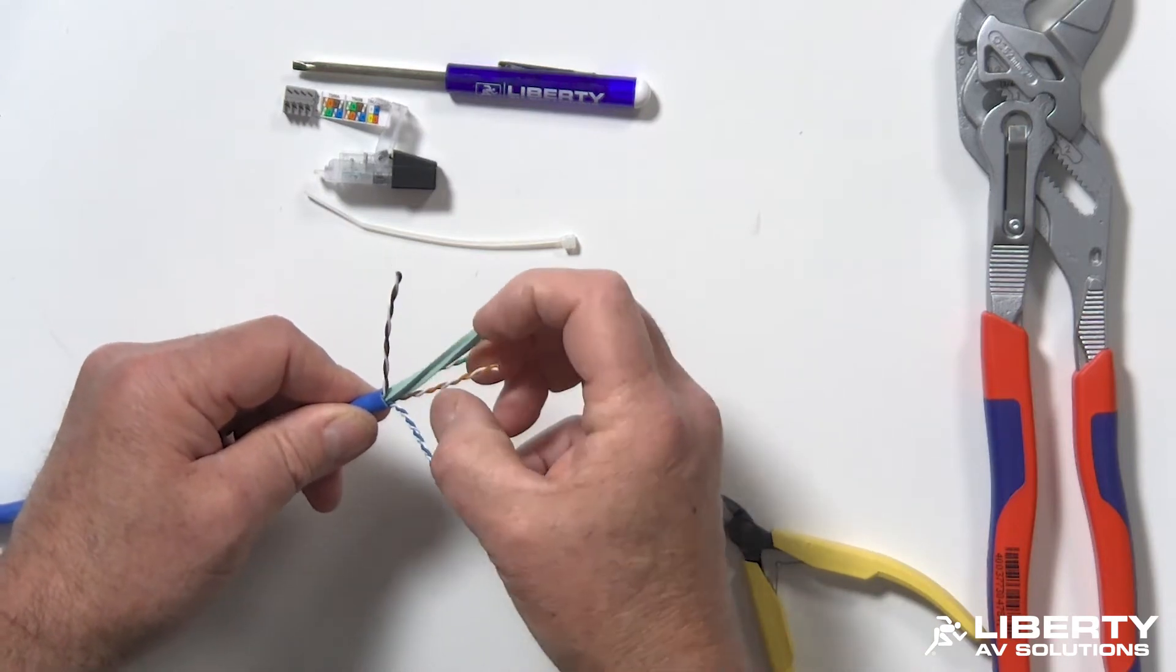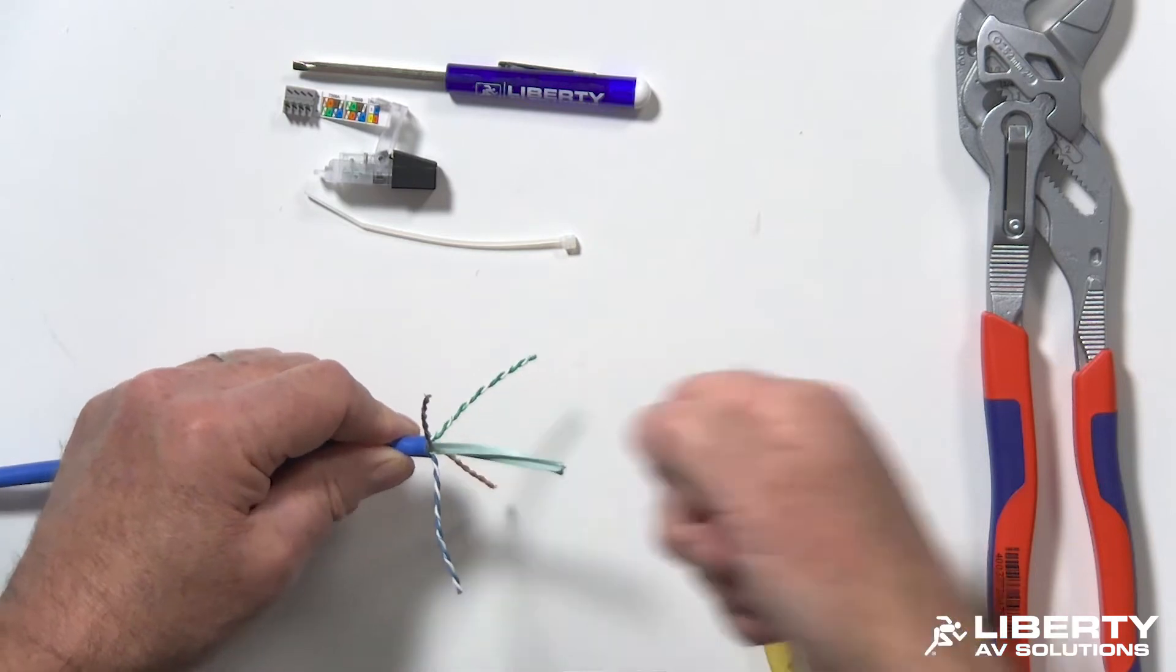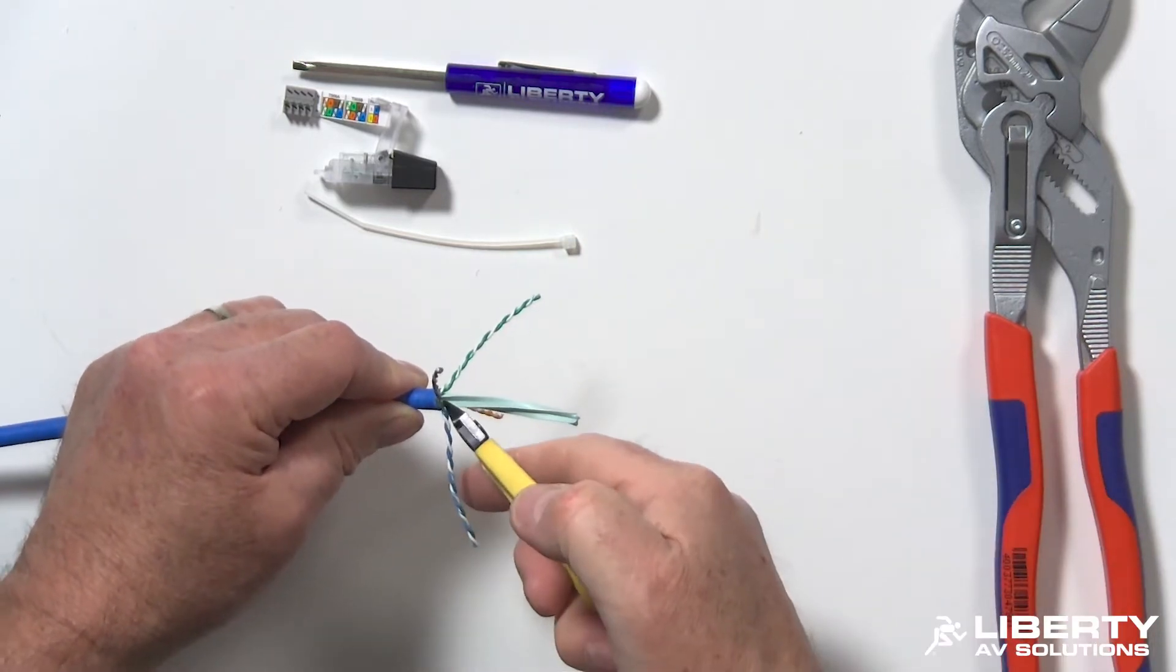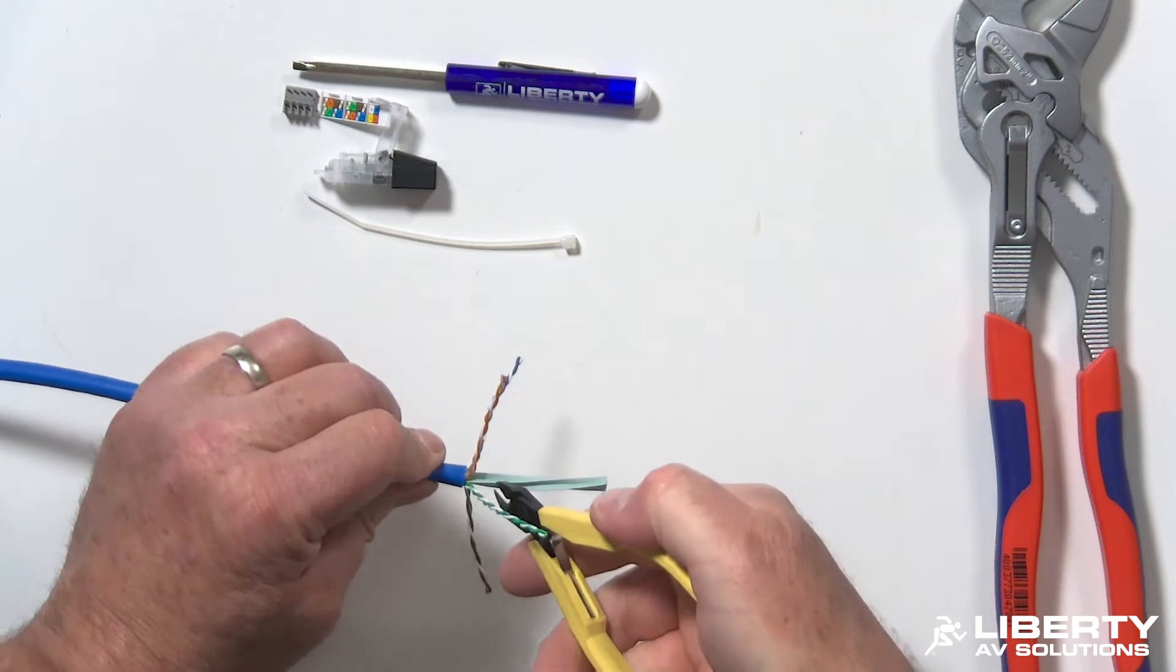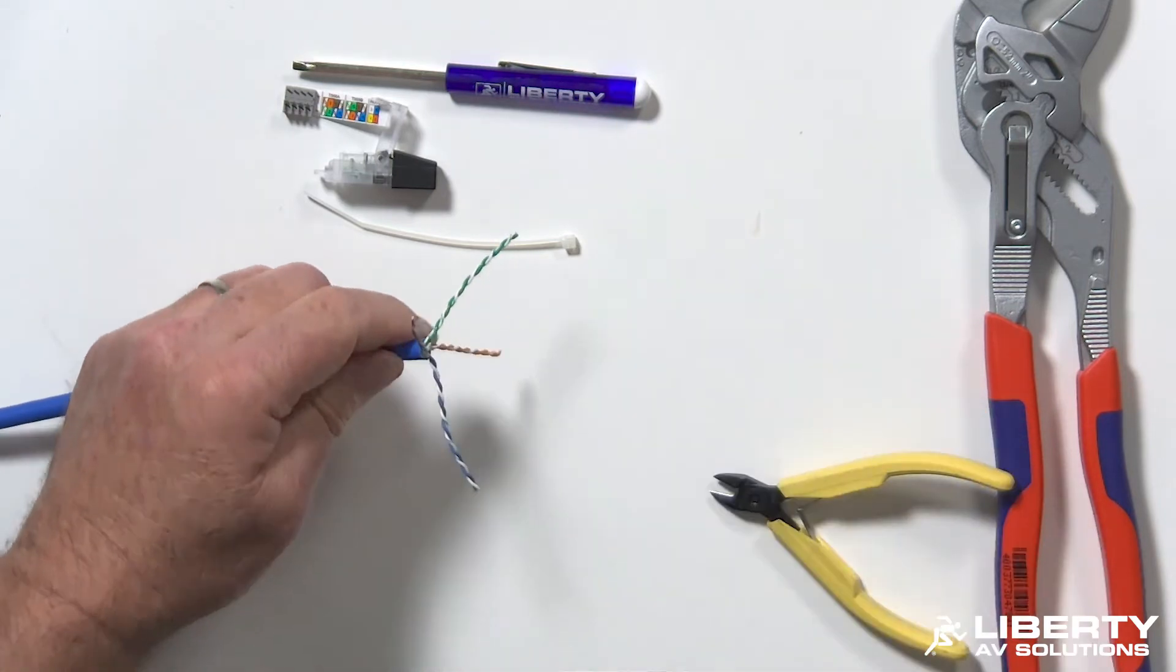Go ahead and separate my pairs away from my spline. I want to take my spline off. You can either pull it and stretch it, cut it and let it snap back in, or you can go ahead and do just a nice little cut down the bottom here, make it nice and neat. Spin that, pull it off.